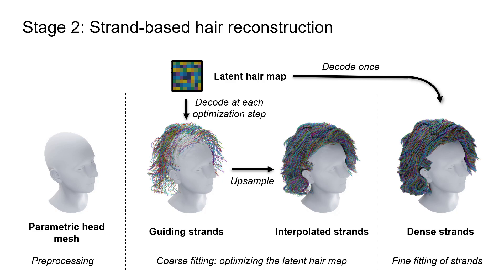For the strand-based hairstyle reconstruction, we first fit a parametric head mesh into the scene to obtain a scalp region from which the hair strands originate. We split the optimization process into two stages: coarse and fine. During the coarse fitting, we parametrize the hairstyle using a latent hair map, which is decoded into a set of guiding strands at each optimization step. These guiding strands are interpolated prior to their rasterization.